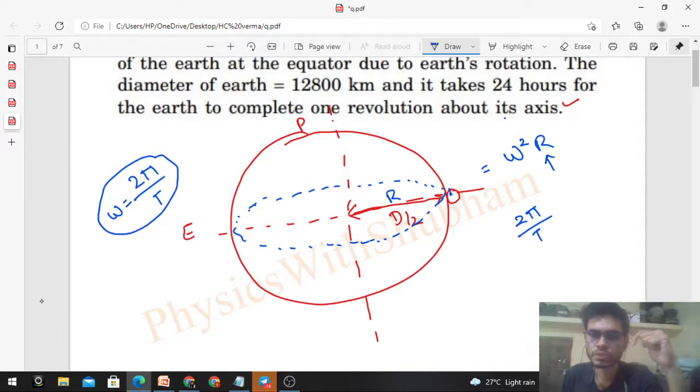That will give you the value of angular speed. Once omega is found - because time is given - make sure that you convert the time into seconds by multiplying with 3600, right? So once that is done, then we can find out omega and multiply with r. Omega square into r will give you the value of acceleration.